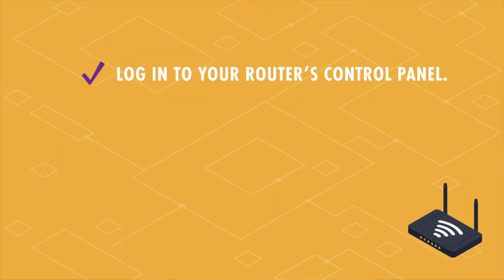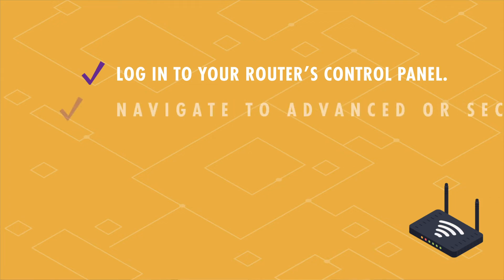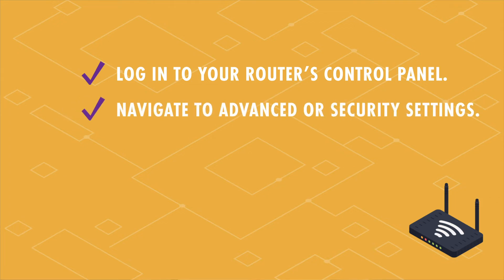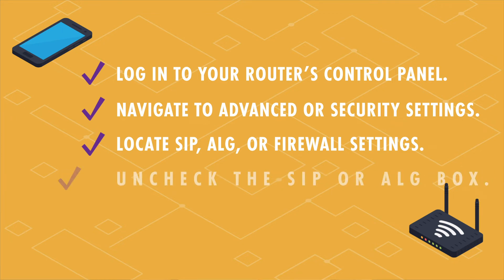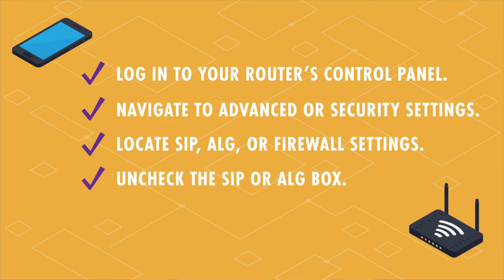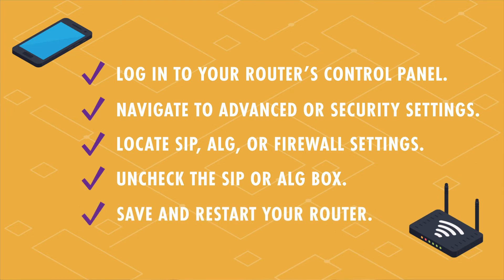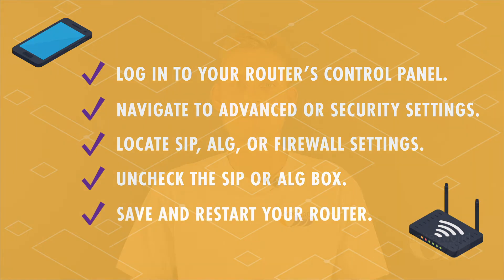Log in to your router's control panel, navigate to advanced or security settings, locate either SIP-ALG or firewall settings, uncheck the SIP-ALG box, then save and restart your router.